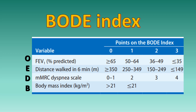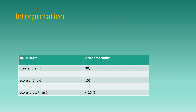How do you interpret the BODE index? A score of more than 7 gives 30% two-year mortality. A score of 5 to 6 gives 15% two-year mortality, and less than 5 gives less than 10% two-year mortality.